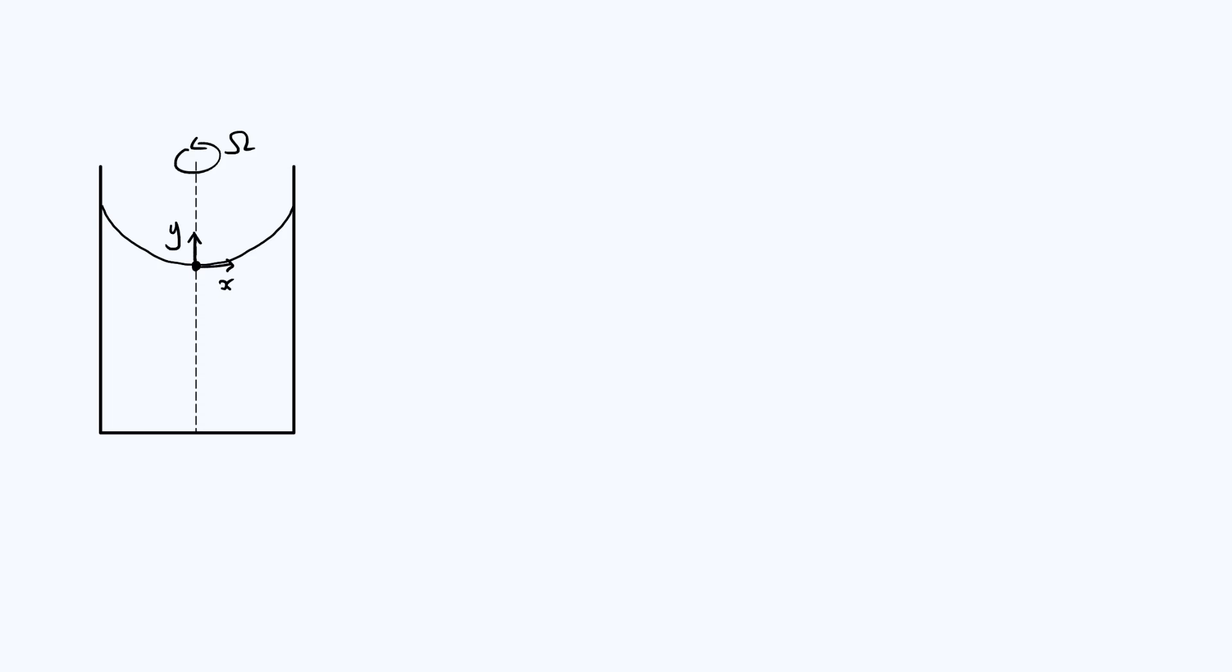Our method is essentially going to be to consider a particle of liquid sitting at the surface and consider the forces and the balance of those forces, and that's going to end up giving us y as a function of x. So if we just mark on the particle that we're considering, let's say it's at this arbitrary position there.